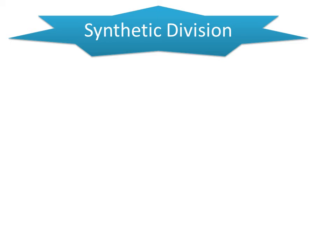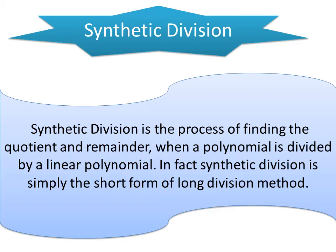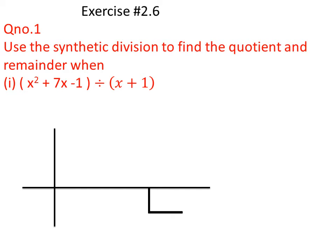Today our topic is Synthetic Division. In synthetic division, we divide two polynomials and can find the quotient and remainder. We can define it as: synthetic division is the process of finding the quotient and remainder — where quotient is the answer of the division and remainder is the term left after the division process — when a polynomial is divided by a linear polynomial, whose degree is 1. Synthetic division is simply the short formula of the long division method, used to avoid lengthy division.